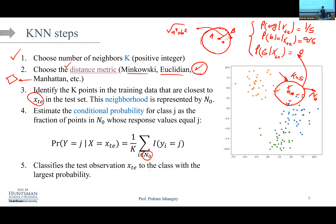Remember: the output of KNN classification is probabilities. So the answer here is four-fifths, or 80%. If the threshold is 50%, this is classified as blue. With three classes it's a bit more challenging, but think of the two-class example — default versus no default. You classify based on highest conditional probability within that neighborhood, given your choice of K and Euclidean distance.